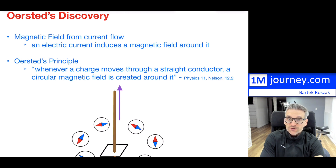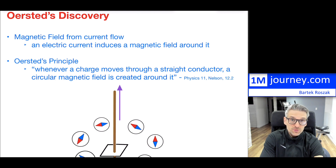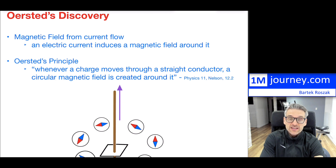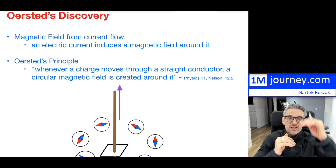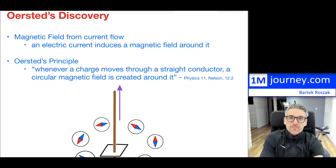If you take an actual current which is flowing — so if you have electrons flowing through a wire — you will notice that if you take a compass and it is sensitive enough, it will start to change direction where a current is flowing through a wire.